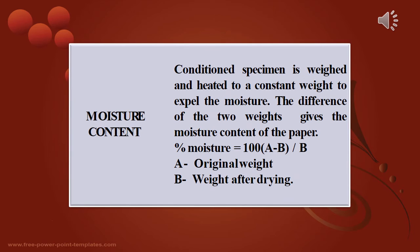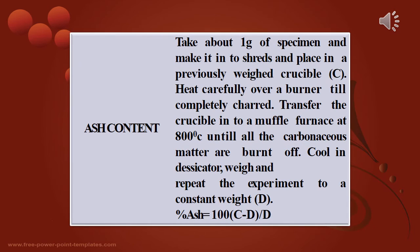For the moisture content test, a conditioned specimen is weighed and heated to constant weight to expel moisture. The difference in the two weights gives the moisture content. Percentage moisture is calculated as: 100 × (A − B) / B, where A is the original weight and B is the weight after drying.